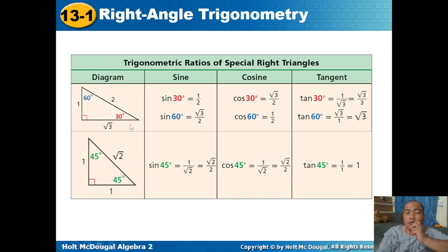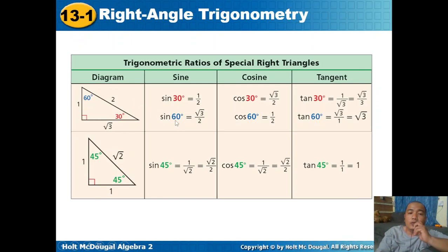For a 30-60-90 degree triangle: if the side opposite the 30-degree angle is 1 unit, then the hypotenuse is twice that length, so 2. The side opposite the 60-degree angle is square root of 3 times the shorter leg, so square root of 3. The sides are 1, square root of 3, and 2. From this, sine 30 degrees equals opposite over hypotenuse: 1 over 2. Sine 60 degrees equals square root of 3 over 2. Cosine 30 degrees equals adjacent over hypotenuse: square root of 3 over 2. Tangent 30 degrees equals 1 over square root of 3, or rationalized as square root of 3 over 3.